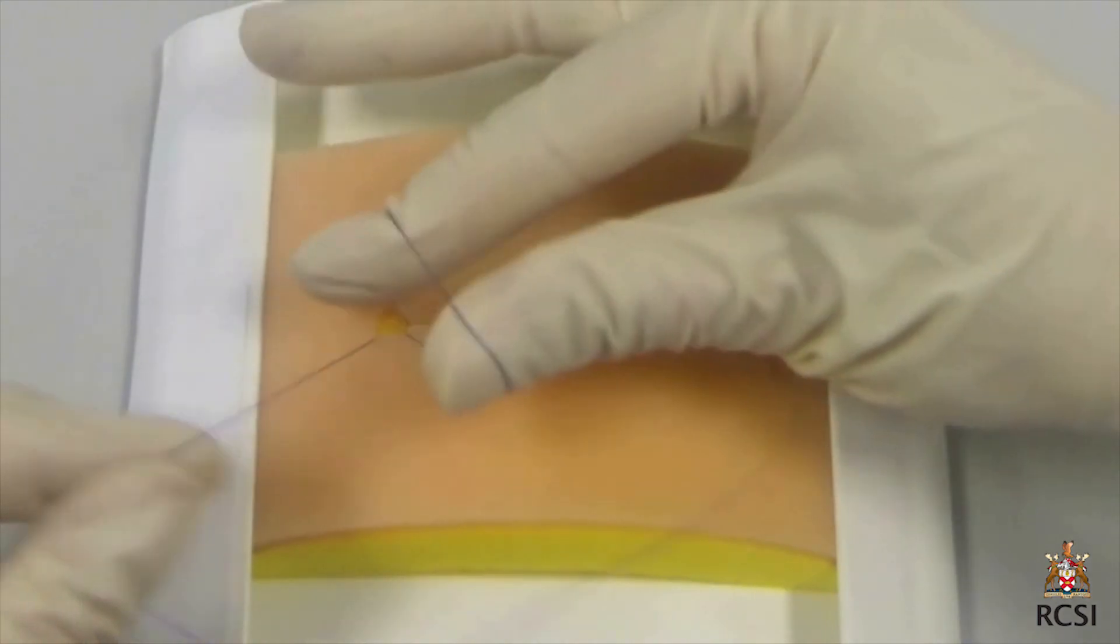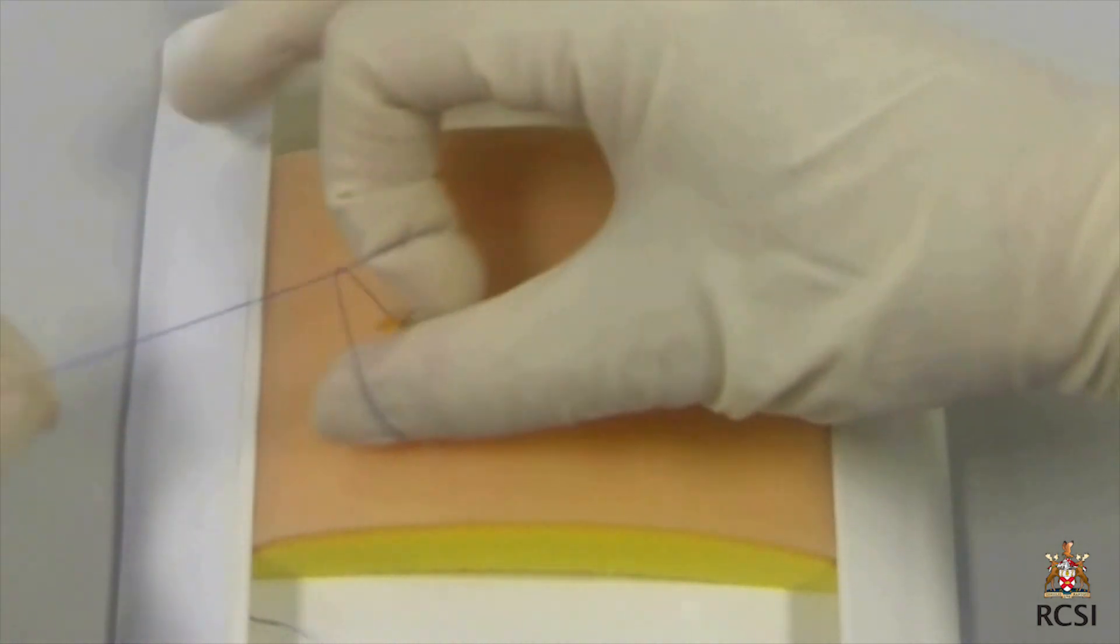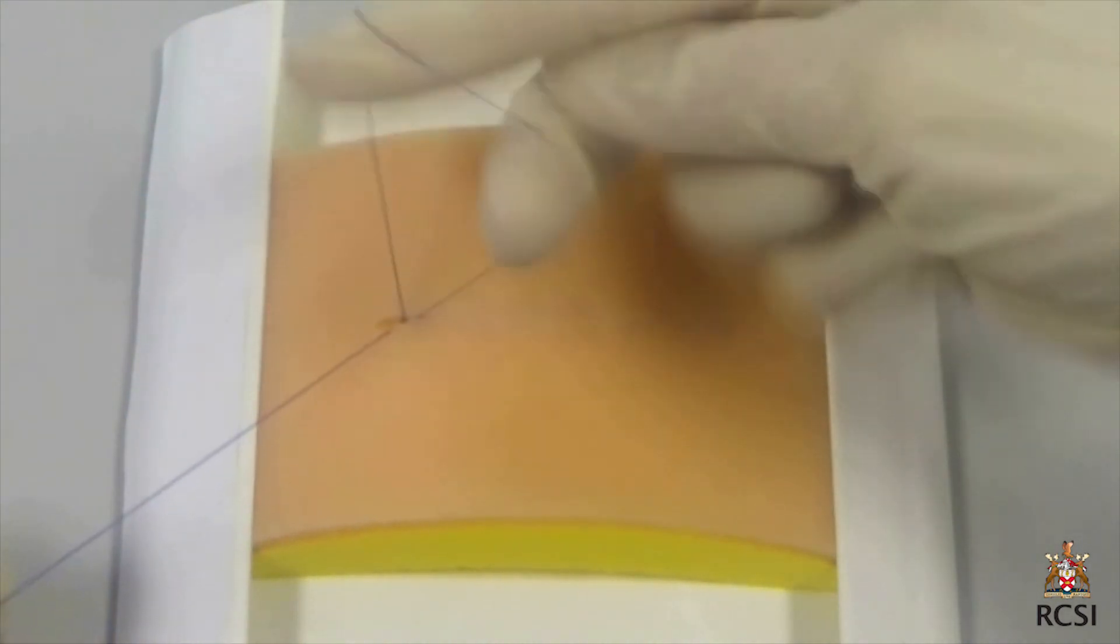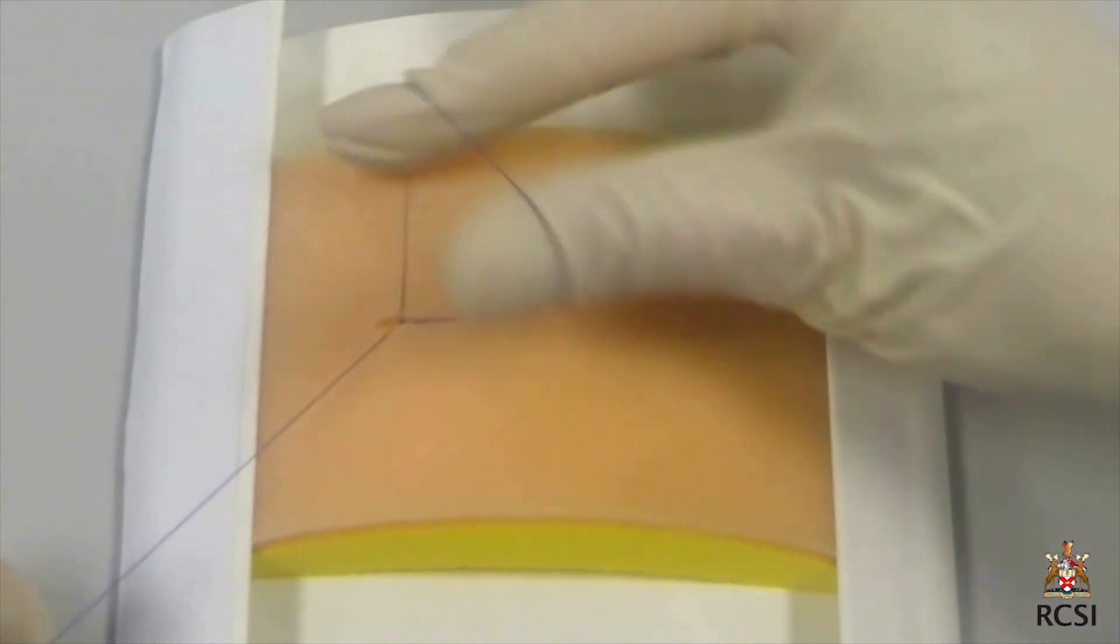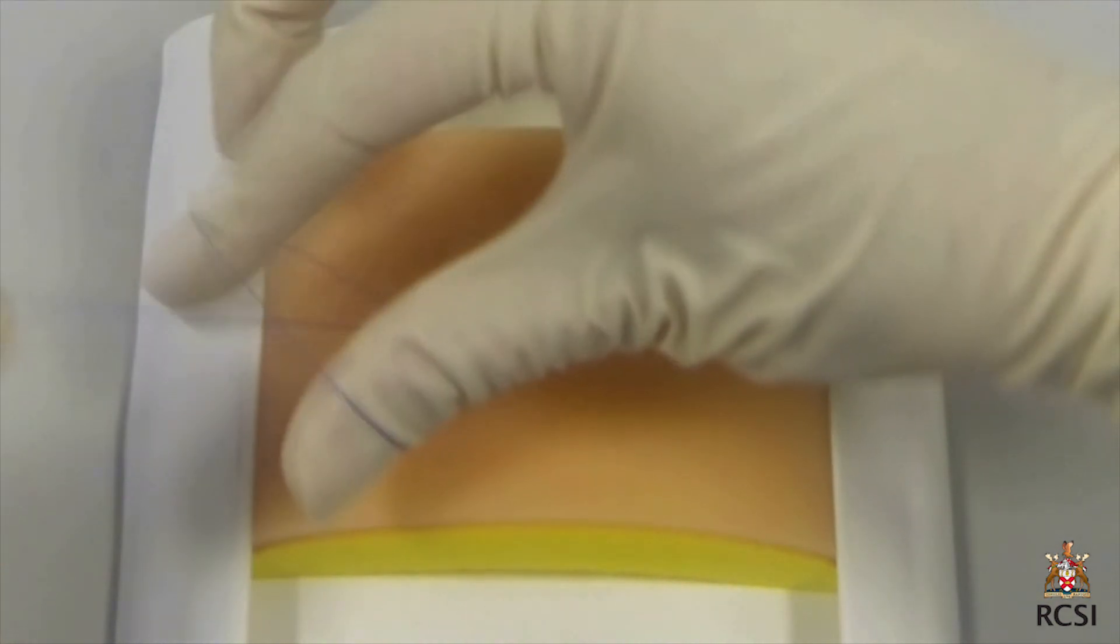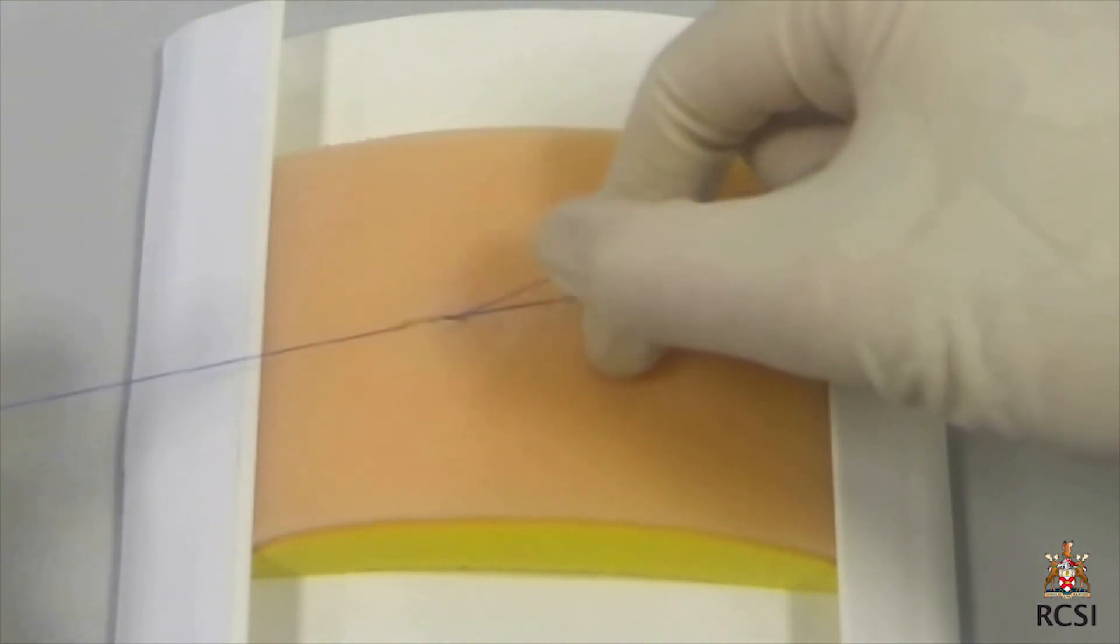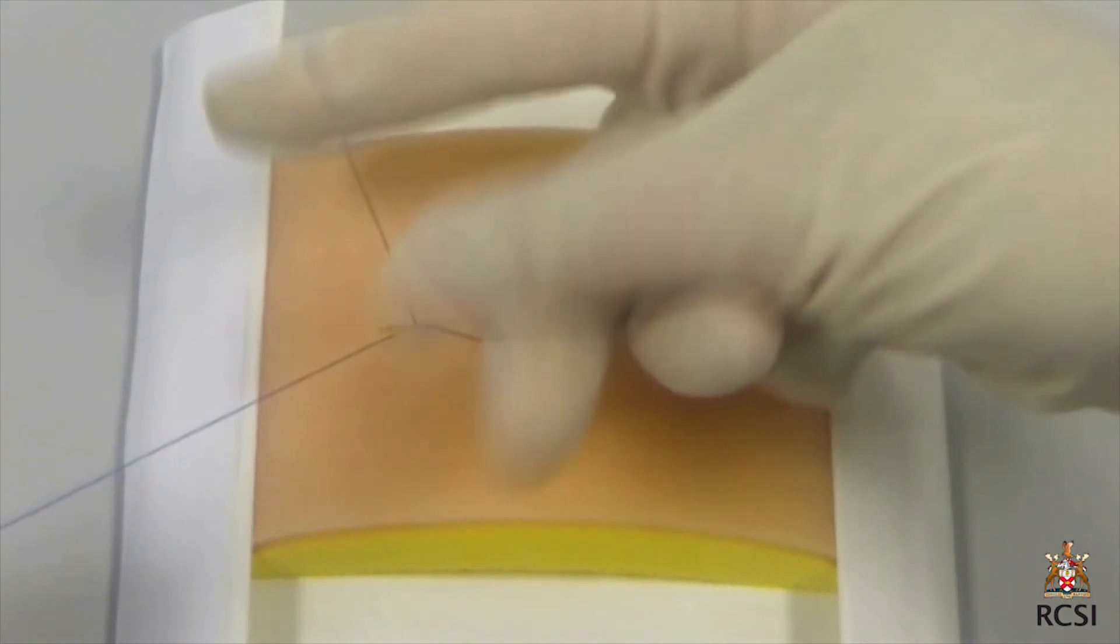The thumb and the index finger are inserted into this loop with the right hand. Then, while holding the long end with the left hand firmly, the long end is grasped with the right index and thumb and pulled partially through the loop. This is tightened to form another loop.